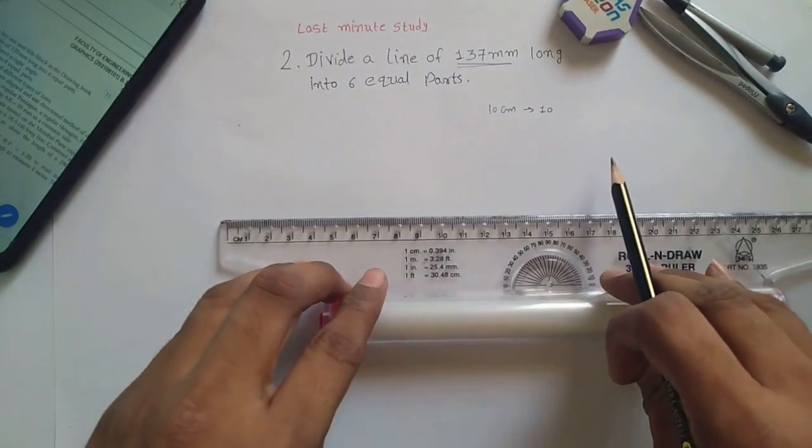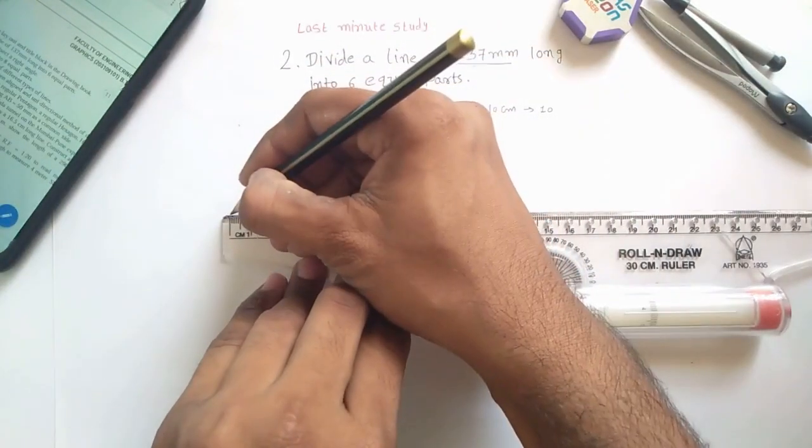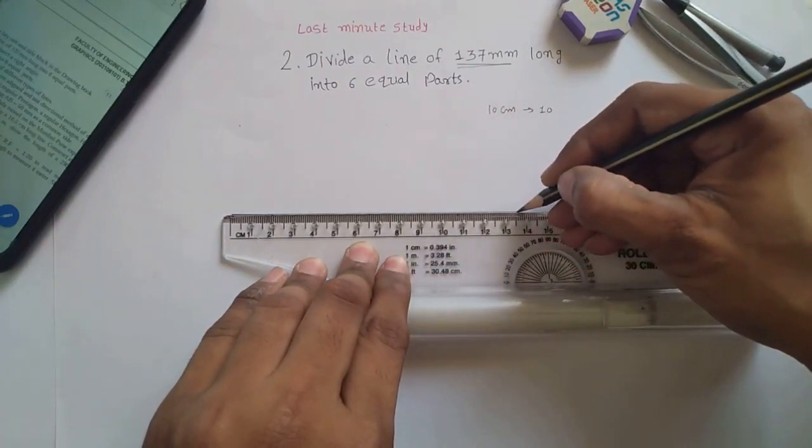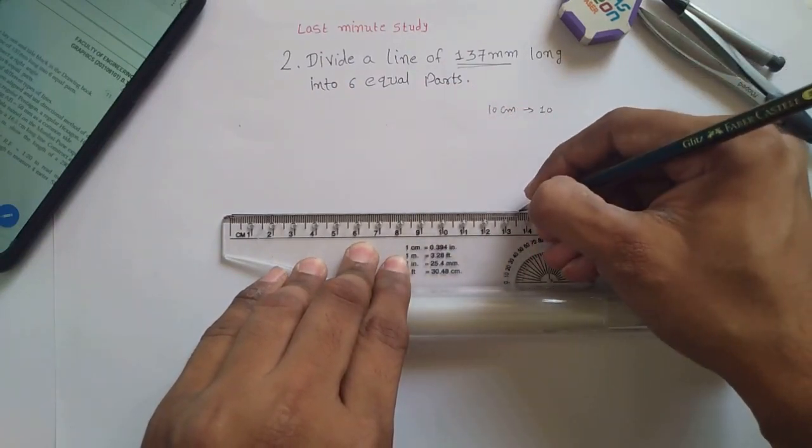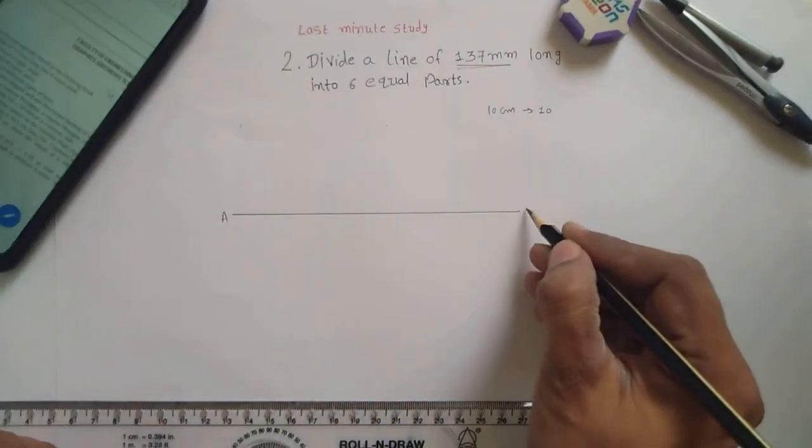So 137 mm long that means 13.7 centimeter, so 13.7, write down the name of AB.